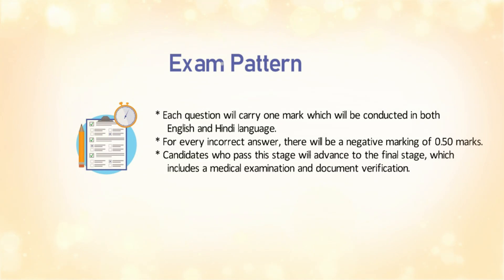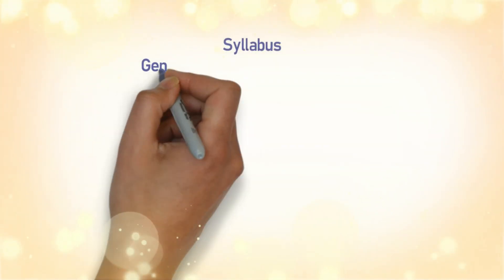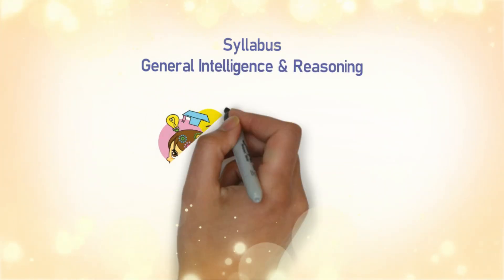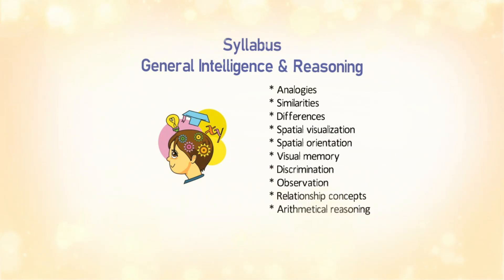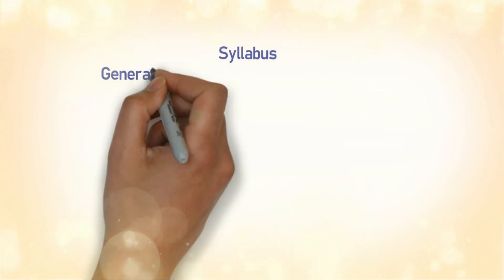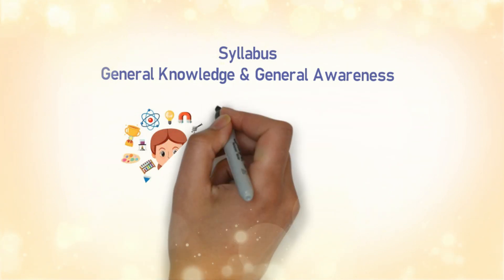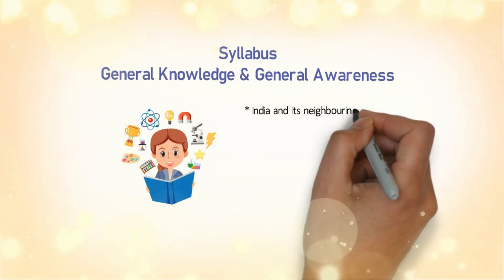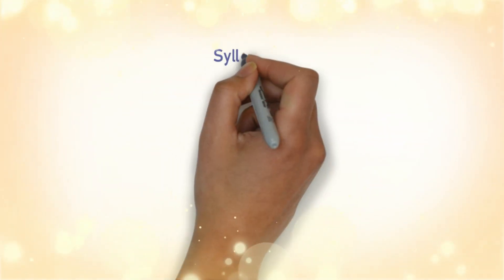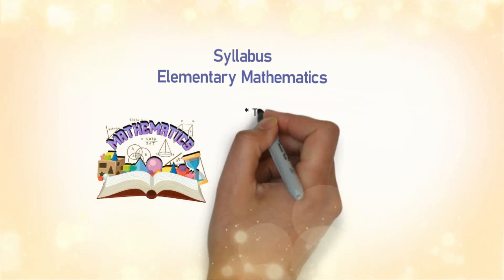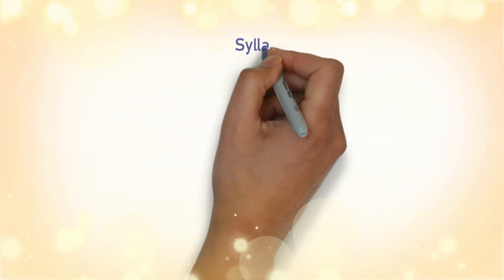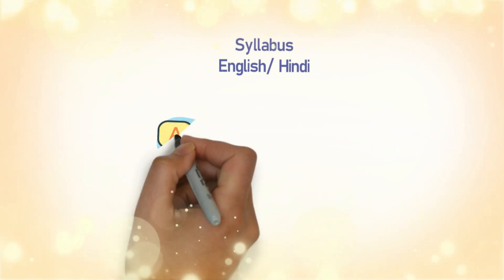Candidates who pass this stage will advance to the final stage, which includes a medical examination and document verification. Syllabus: General Intelligence and Reasoning covers analogies, similarities, differences, spatial visualization, spatial orientation, visual memory, discrimination, observation, relationship concepts, and arithmetical reasoning. General Knowledge and General Awareness covers India and its neighboring countries, sports, history, geography, economic scene, Indian constitution, scientific research, culture, and general polity. Elementary Mathematics covers time and distance, number systems, boat and stream, algebra, geometry, profit and loss, ratio and proportion, and averages. English or Hindi covers error spotting, cloze test, synonyms and antonyms, and fill in the blanks.